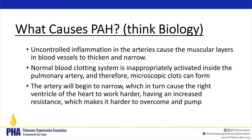Looking at the biology of PAH causes: there's uncontrolled inflammation in the arteries causing the muscular layers and blood vessels to thicken and narrow. The blood clotting system is also inappropriately activated inside the pulmonary artery, which can cause microscopic — very small — clots. That's why we may order a VQ scan to look for small clots a CT scan might not pick up. The artery then narrows and thickens, making it harder for blood to pump from the lungs to the heart and out to the body.